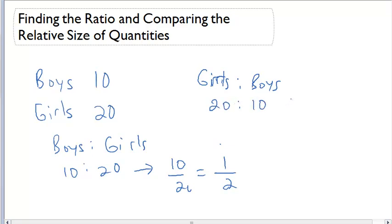Now, if I want to say, well how many times larger, how many times more girls are there than boys, I could write this as a fraction and simplify. So, I could do there are 20 over 10, or two times more girls than there are boys.